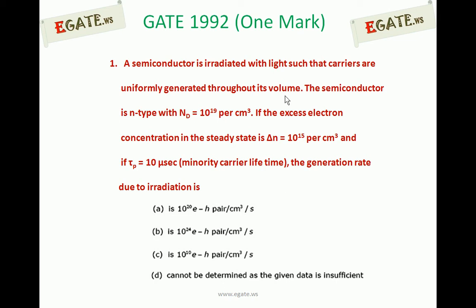A semiconductor is irradiated with light such that the carriers are uniformly generated throughout its volume. The semiconductor is n-type with donor concentration of 10 power 19 per centimeter cube. The excess electron concentration in the steady state is 10 power 15 per centimeter cube and tau p is equal to 10 microseconds, the minority carrier lifetime. The generation rate due to irradiation is?